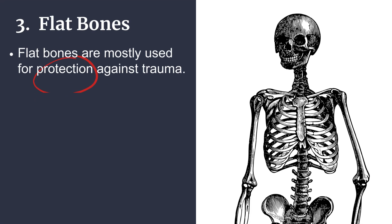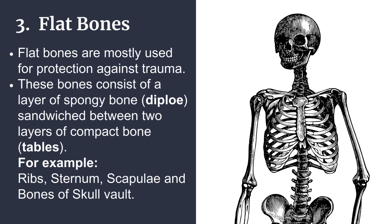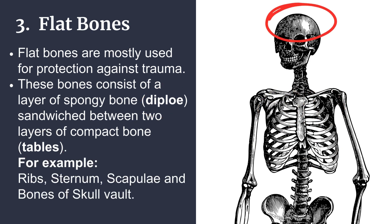Flat bones are mostly used for protection against trauma. These bones consist of a layer of spongy bone known as diploe, sandwiched between two layers of compact bone known as tables. For example, ribs, sternum, scapulae, and bones of the skull vault.